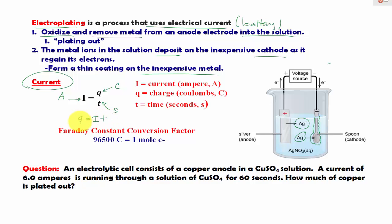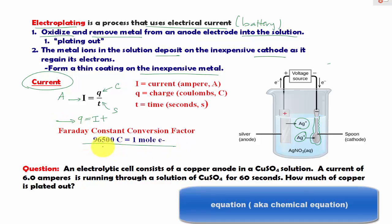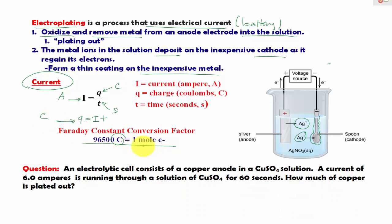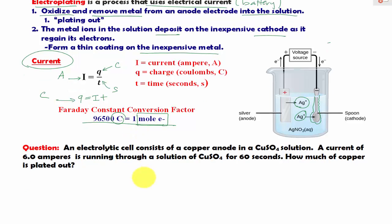We are looking for Q specifically because of the Faraday constant. The Faraday constant gives us the relationship between coulombs (Q) in terms of moles of electrons, and moles of electrons relate to the equation.